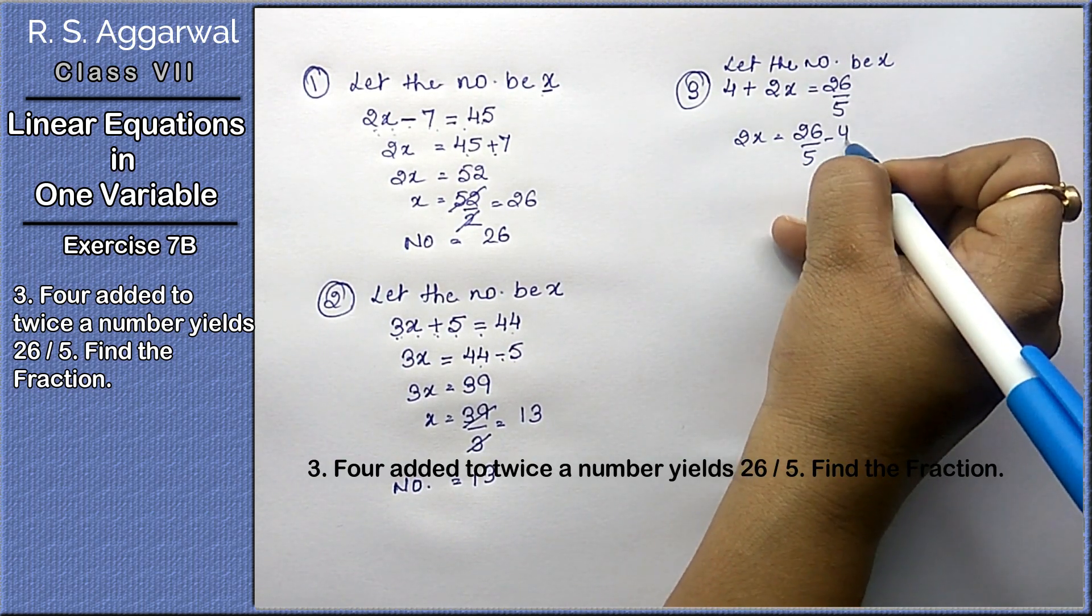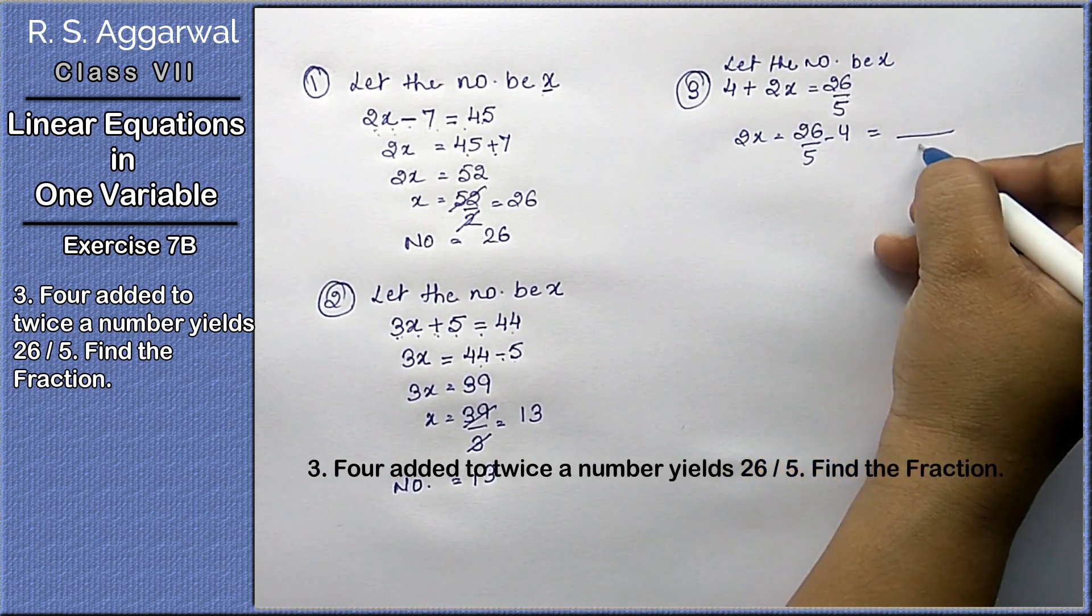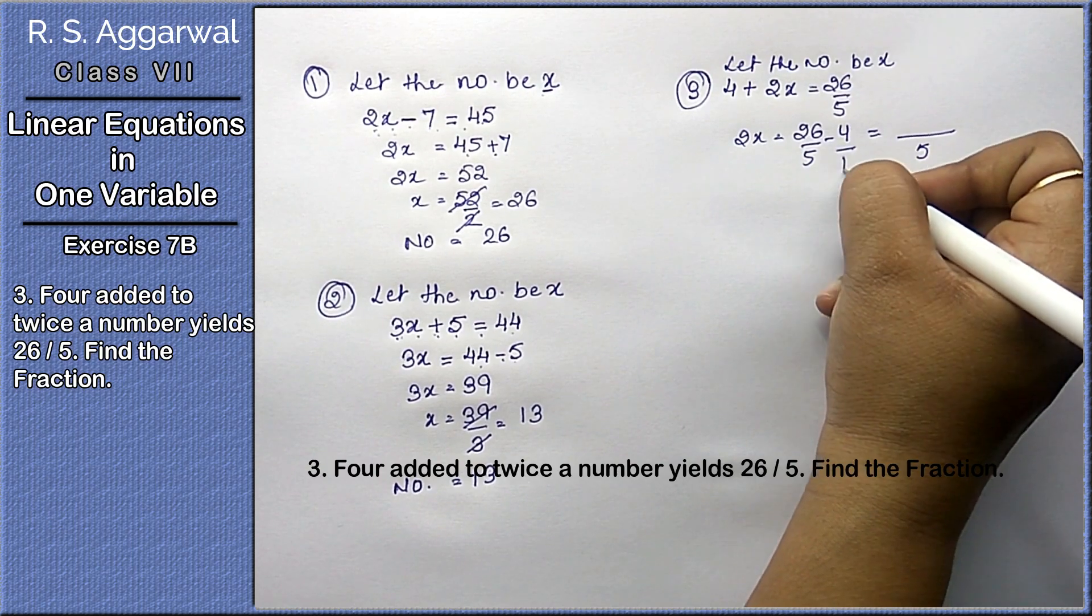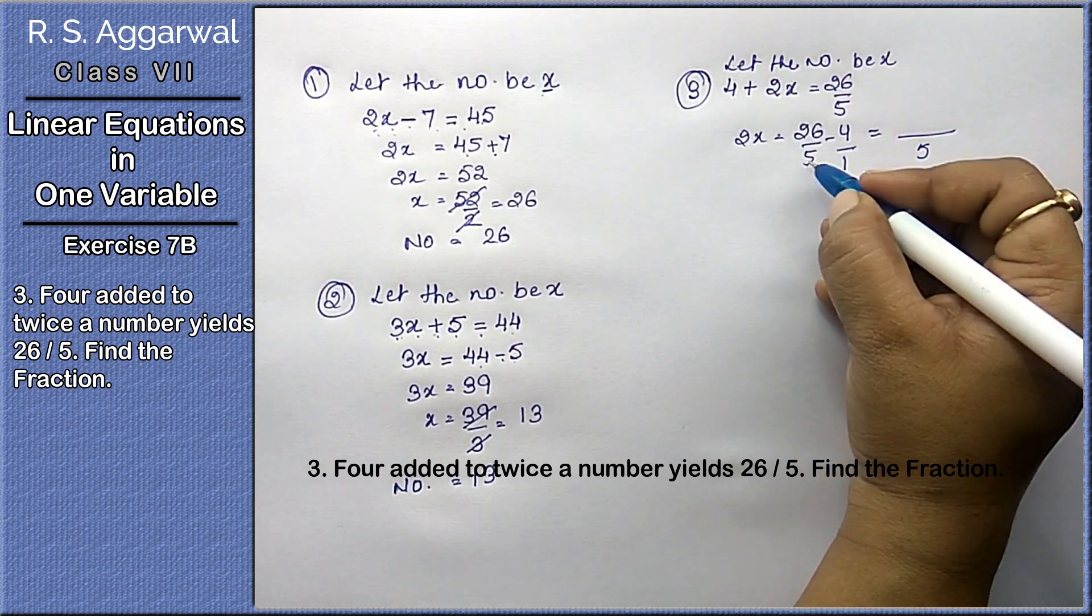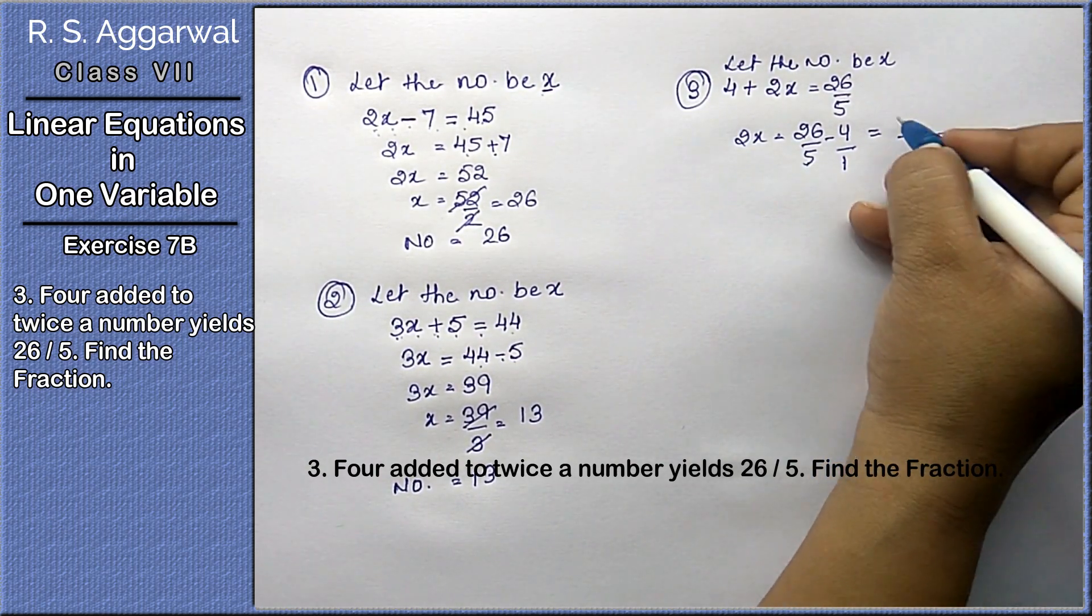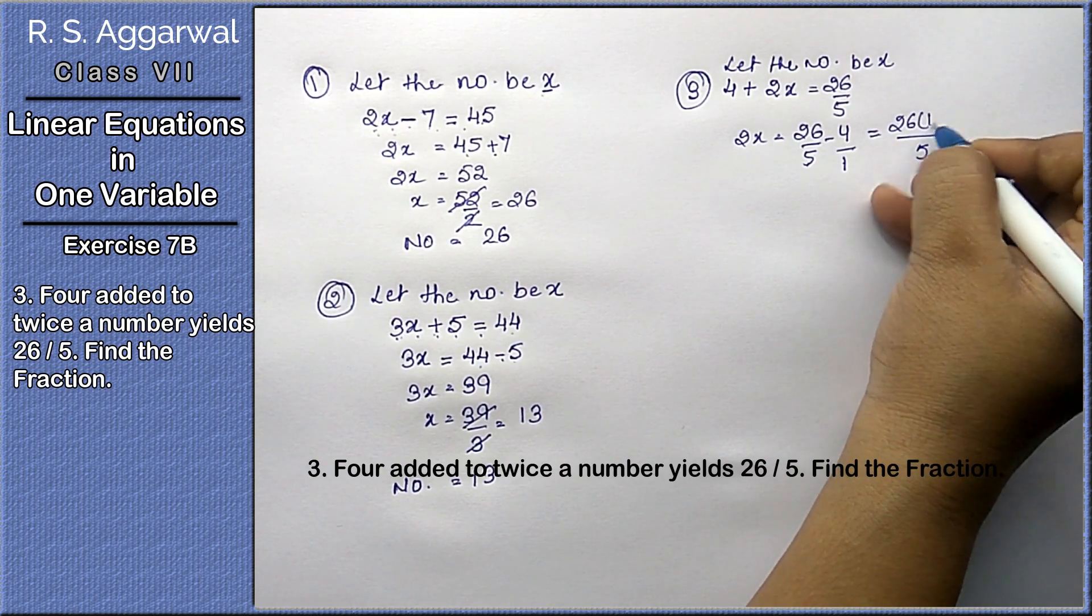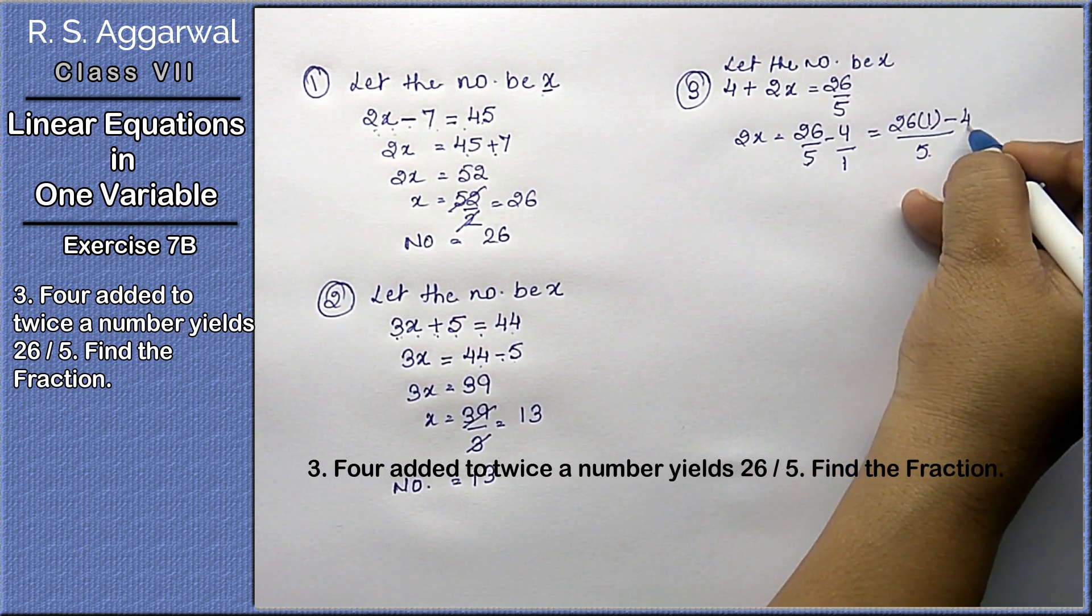Twice a number is 2x. 4 plus 2x will yield, equals to 26 by 5. x terms on this side, non-x terms on the other side. We take LCM as 5.